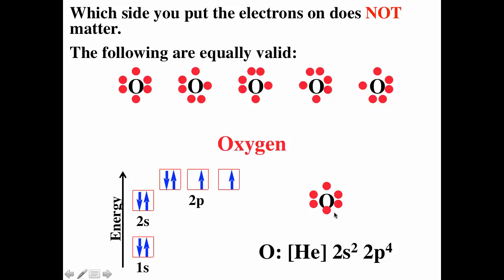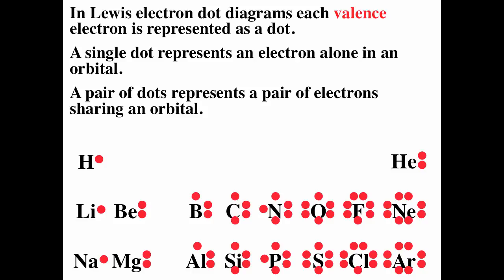It doesn't really matter how you arrange the dots, but you should have two pairs and two by themselves. The Lewis diagram reflects the electron energy diagram, so you should have two pairs and two singles. Remember, we're only dealing with the valence electron configuration. Looking at the first three rows of the periodic table, elements in the same column have the same valence electron configuration and the same number of valence electrons, so their Lewis diagrams look identical.